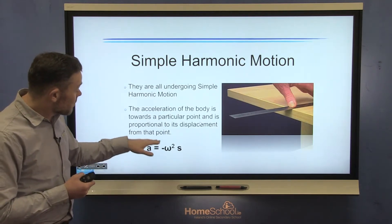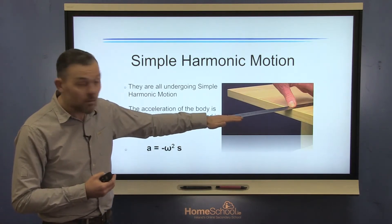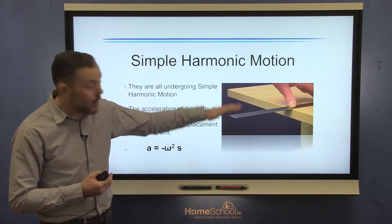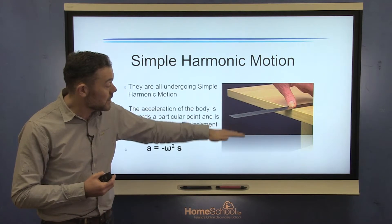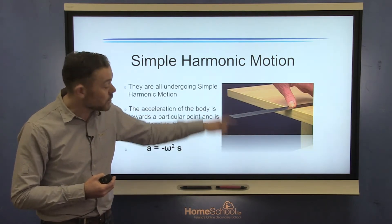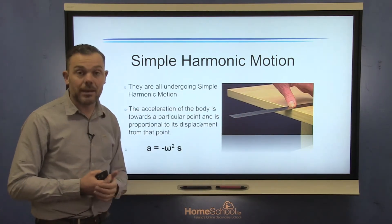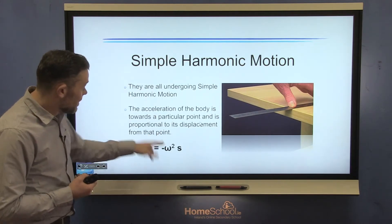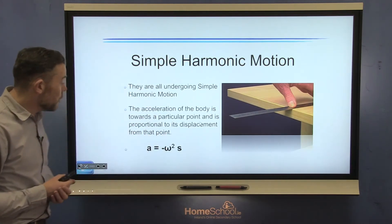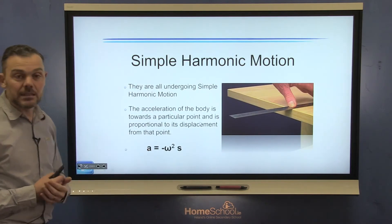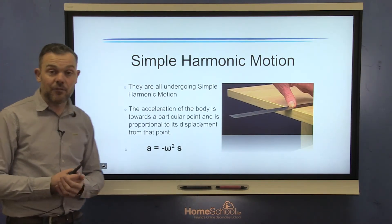What the minus sign really references is the direction. There's your zero equilibrium, it goes up and it goes down, so it's just indicating direction — up and down from the zero position. That formula is in our tables, and later on we'll have a look at using it.